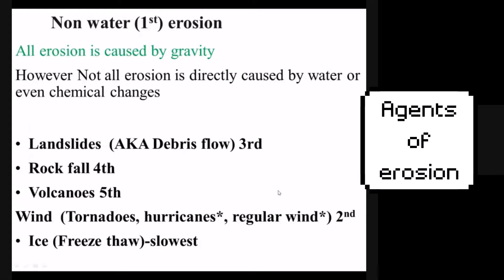There are other types of erosion that do not include water. All erosion on earth is caused by gravity — without gravity, sediment, sand, silt, and clay would not move downhill; it would just stay in place. However, not all erosion requires direct involvement of water. Water does help other types of erosion, including landslides, rock falls, and volcanoes, but it does not have to be present to have these types of erosion.